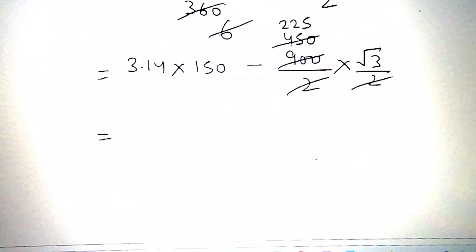On multiplying, then we get 471 minus 225 into 1.732 cm square. On subtracting, then we get 81.3 cm square.